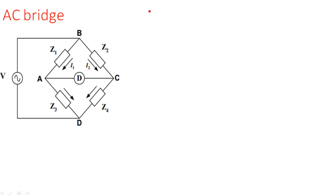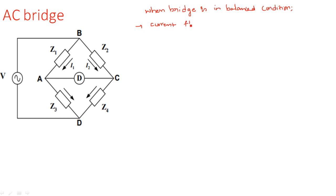When the bridge is in balanced condition, the current flowing through the detector is zero. This means the voltage on either side of the detector is equal — that is, VA equals VC. The voltage at point A equals the voltage at point C because the detector is not working and is simply in open condition.